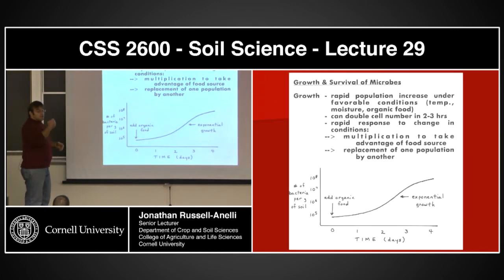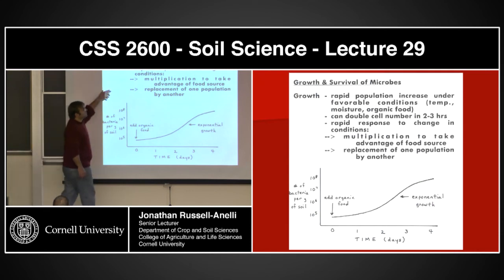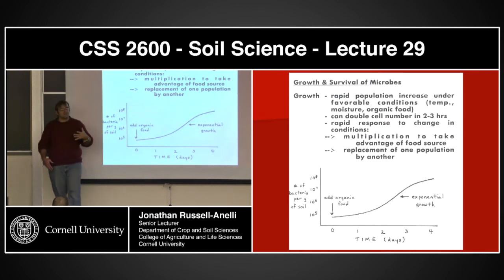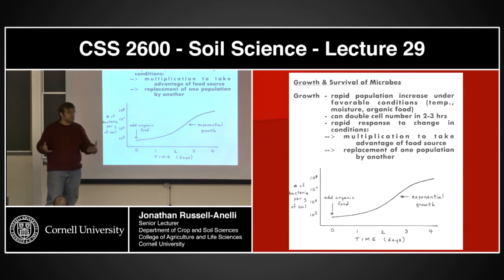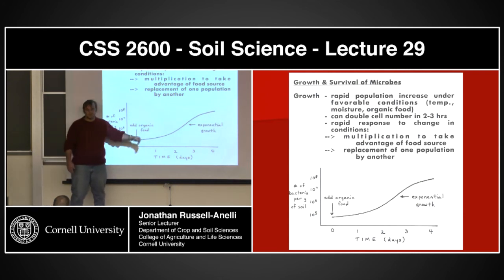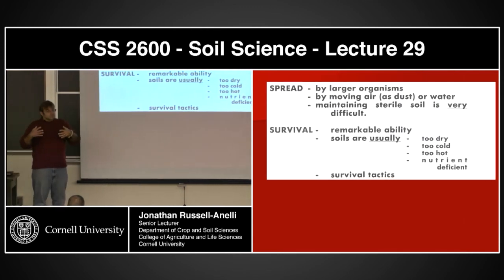In optimal conditions, bacteria can double cell numbers in two to three hours. Because of this rapid cycling of their population, they can have a rapid response to changes in conditions. They multiply to take advantage of food sources. These organisms are not immortal, so we're looking at a replacement population too. E. coli, for example, in optimum growth conditions that never died would basically rule the solar system in a couple of weeks — they grow that fast. But the reality is they die and they get eaten, and they very rarely have optimum situations, so you won't see this type of extreme growth curve.